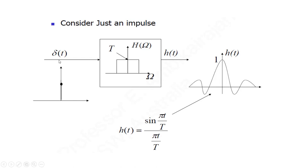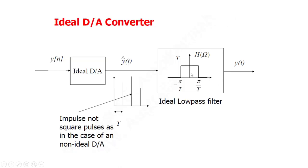Consider just one impulse — a delta T function — and pass it through the low pass filter. Taking the Fourier transform, you will get the output in the frequency domain, and once you take the inverse Fourier transform, you will get the signal back and that signal will have a sinc function shape. So H(T) is sine pi T by capital T. The output will be like a sinc function. This is the time domain response of the ideal filter.